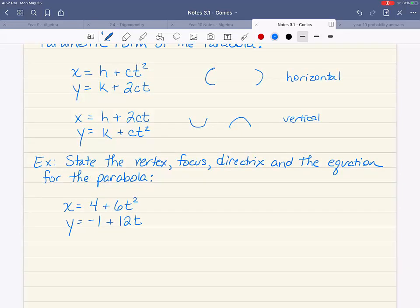So the first thing we need to figure out is which of these two formulas, parametric formulas, does this one mimic? Because the squared term is with the x, it matches the first form, which is a horizontal parabola. This one is horizontal.